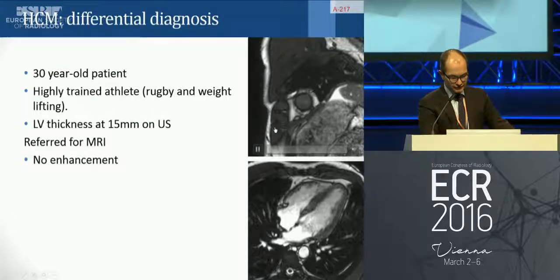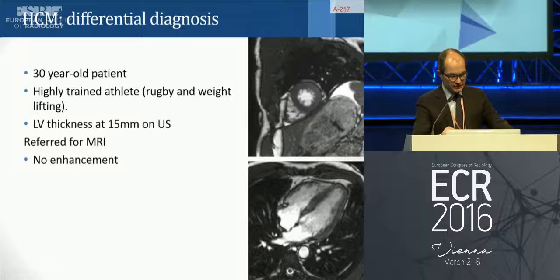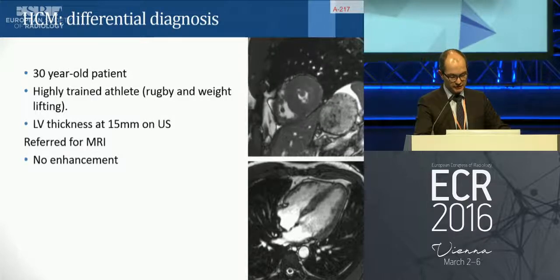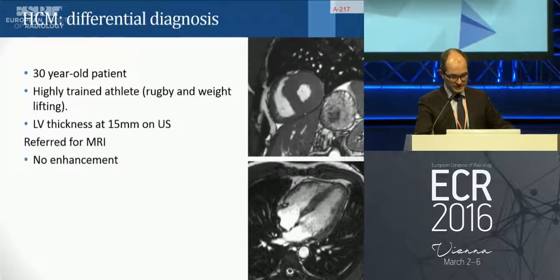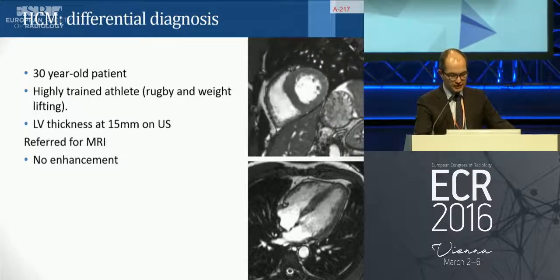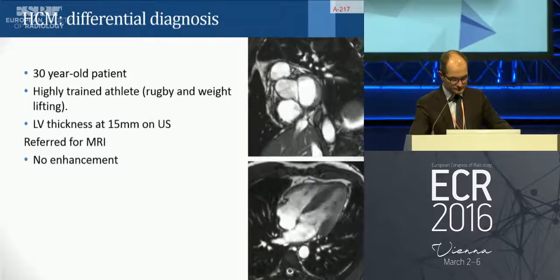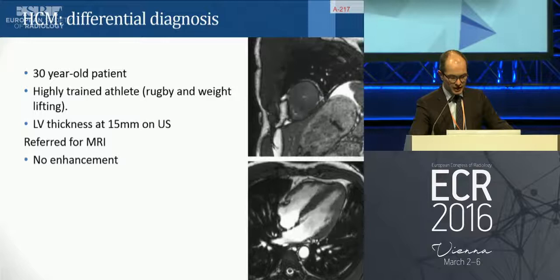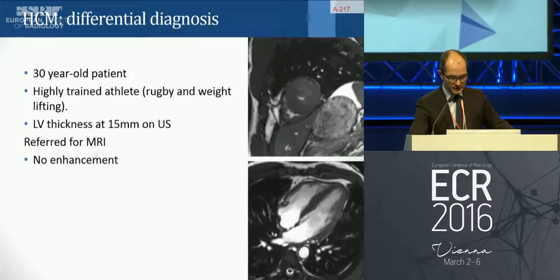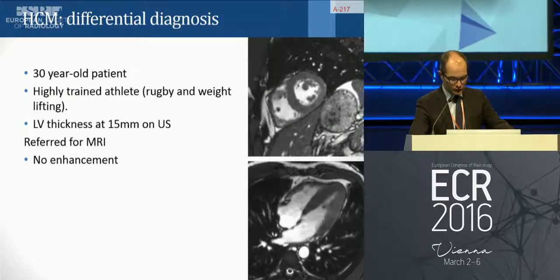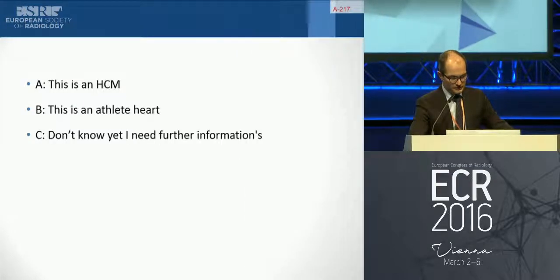A highly trained athlete was referred because ultrasound depicted LV thickness at 15 mm. They were sent to MR to define the type of hypertrophy. The hypertrophy is really homogenous and located in all segments of the myocardium, with wall thickness homogenously increased throughout. Do you think this is hypertrophic cardiomyopathy, athlete heart, or do you need further information?